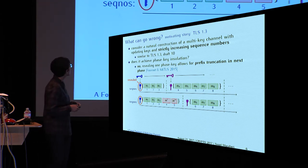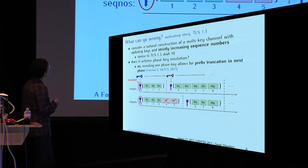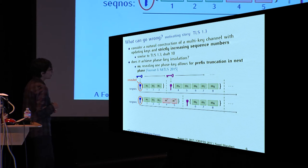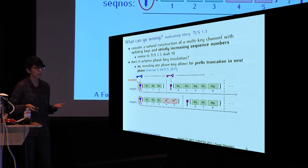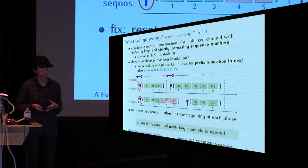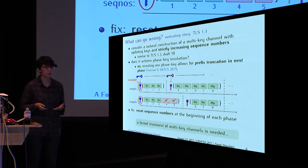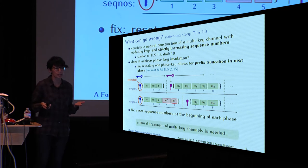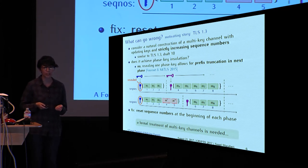They noted that if the phase key of phase 1 is revealed, the adversary can drop some messages from the beginning of phase 2, and then to cover up for the mismatch in sequence numbers, the adversary — knowing the phase key in phase 1 — can add some valid ciphertexts at the end of it. So this kind of channel cannot provide phase key insulation. The fix proposed by the METLS team is quite simple: just reset the sequence numbers at the beginning of each phase. However, this example shows why it is not trivial to build secure multi-key channels and why a formal treatment was necessary.